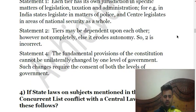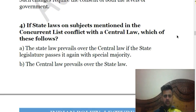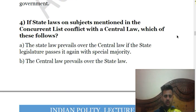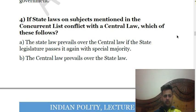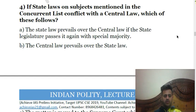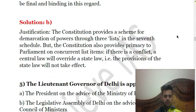The fourth question asks: if state laws on subjects mentioned in the Concurrent List conflict with a central law, which of these follows? As explained, both the state government and central government can make laws on subjects in the Concurrent List. However, if a state law and a central law are in conflict, the central law shall prevail. So the answer is B — the central law prevails over the state law.